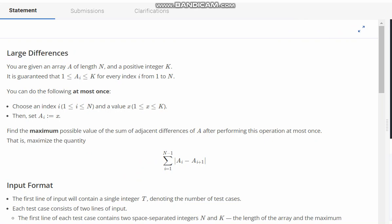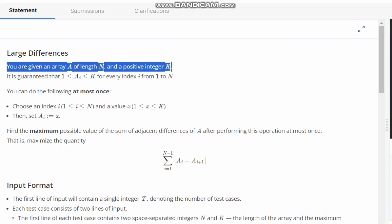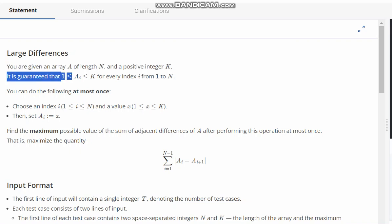The problem states that you are given an array A of length N and a positive integer K. It is guaranteed that A[i] belongs to 1 to K for every index i from 1 to N. You can do the following at most once.